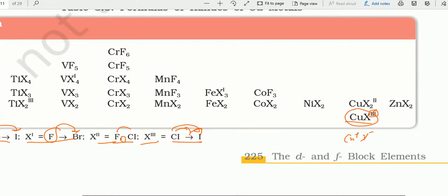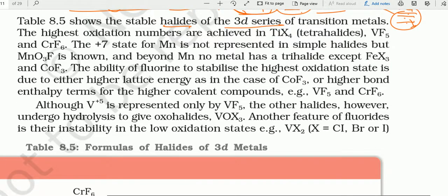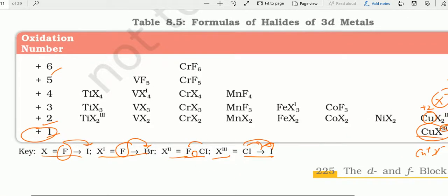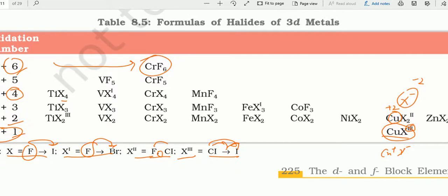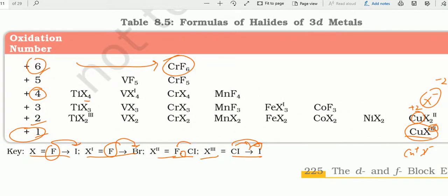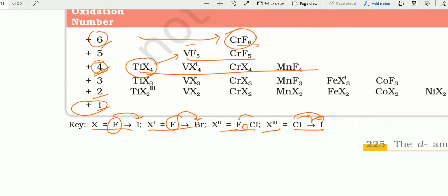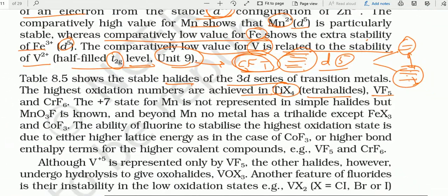The highest oxidation numbers are achieved in tetrahalide TiX₄ (+4), pentahalide VF₅ (+5), hexahalide CrF₆ (+6)। Plus 7 state for Mn is not represented in simple halide — MnO₃F जैसे oxofluoro compound में Mn का +7 oxidation state मिलता है। Mn को higher oxidation state तक पहुँचाने के लिए oxygen ज़रूरी है — जैसे MnO₄⁻ में Mn का +7।